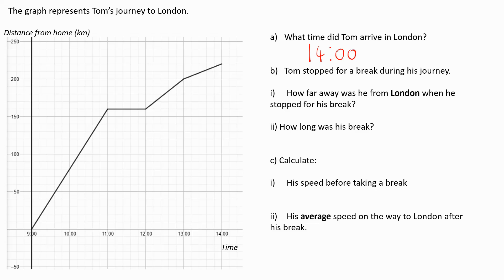He stops for a break during his journey. How far away was he from London when he stopped for his break? When he's at London, that's at the end of the graph here, which is showing his journey to London. We can see that that is at 220 kilometres from home. He takes his break during this horizontal section of the graph, which is at 160 kilometres from home. To work out how far away he is from London when he's taking his break, I need to do 220 take away 160, which is 60 kilometres. So when he takes his break, he's 60 kilometres from London.